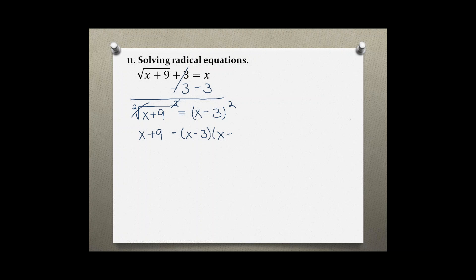We can use FOIL to solve the right side, and we get x times x which is x squared, x times negative 3 so minus 3x, negative 3 times x another minus 3x, and negative 3 times negative 3 is positive 9.